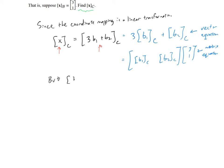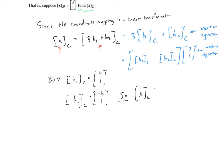Here's the kicker: I know what b1 is in terms of c — that was given as (4, 1). And I know that b2 relative to c equals (negative 6, 1), from the given equation b2 equals negative 6c1 plus c2. So the coordinate vector for x relative to basis c equals the matrix [4, 1 | negative 6, 1] times the vector (3, 1), which gives 6 and 4.